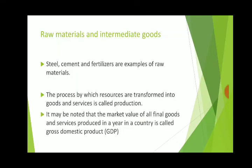Raw materials and intermediate goods — steel, cement, and fertilizers are some examples of raw materials. The process by which resources are transformed into goods and services is called production. The process of converting raw materials into finished goods is known as production. The market value of all final goods and services produced in a year in a country is called Gross Domestic Product.